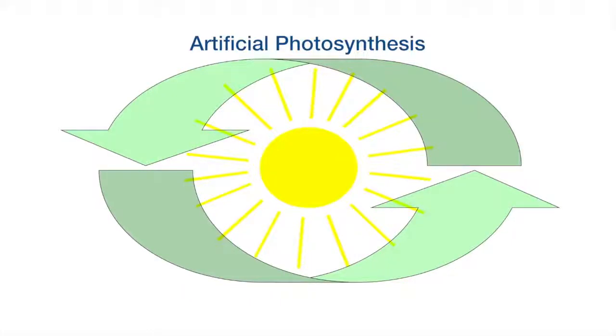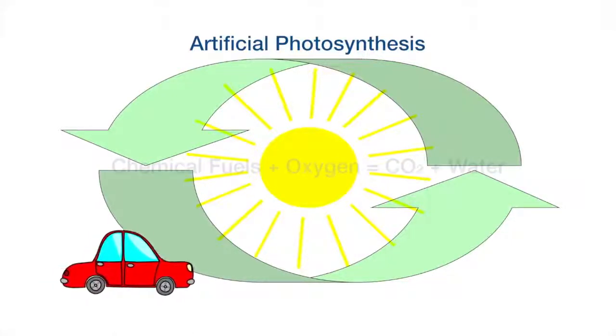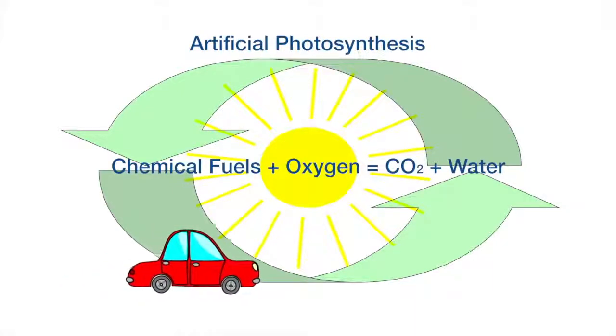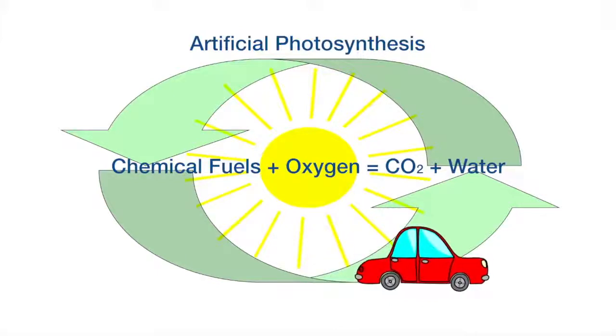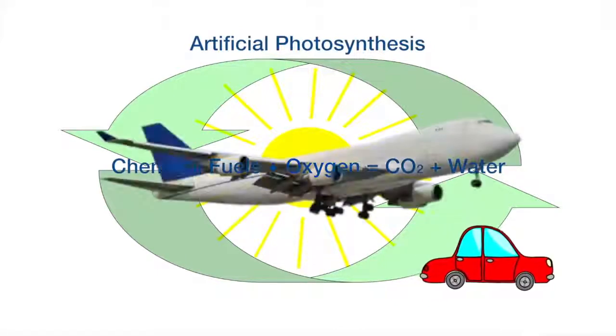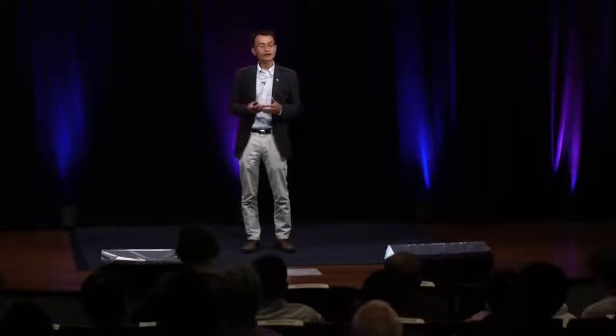Every day when we drive our car, we are basically burning gasoline, using its energy, and releasing CO2 and water back into the environment. This artificial photosynthesis technology can turn that CO2 and water back into chemical fuels using sunlight. If we can develop an artificial photosynthetic system with good efficiency and low cost, we are essentially offering a carbon-neutral solution to our energy and environmental problems.